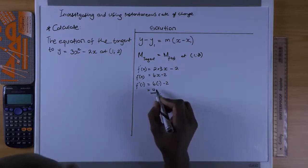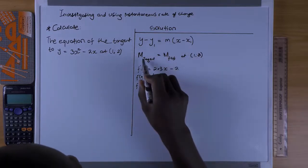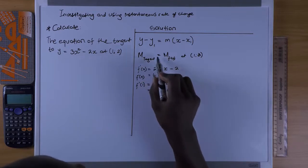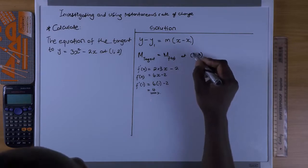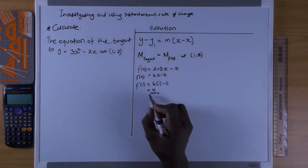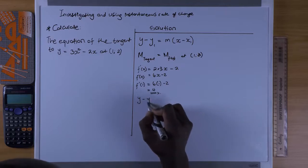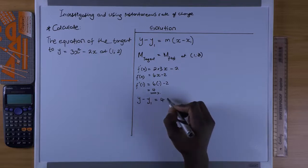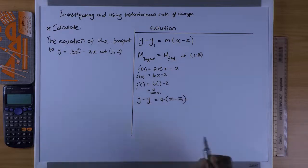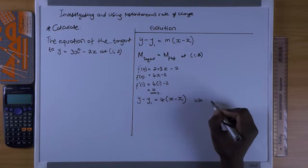Now we have the gradient at this point. The gradient of the tangent and the gradient of the function at that point are equal. So from the equation y - y₁ = m(x - x₁), with m = 4, we get y - y₁ = 4(x - x₁). The next step is to substitute the given point.